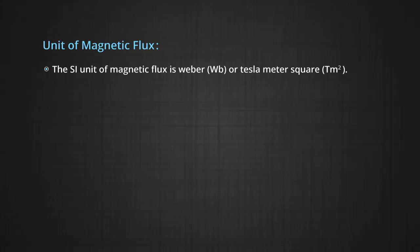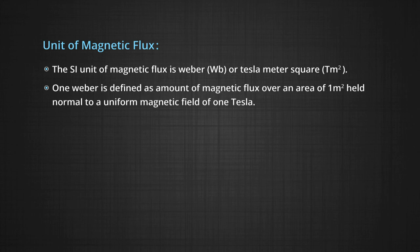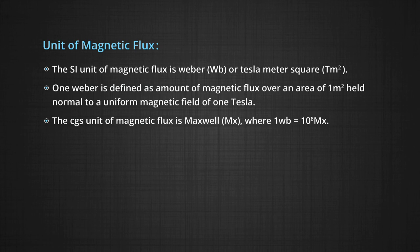The SI unit of magnetic flux is Weber or Tesla meter squared. 1 Weber is defined as the amount of magnetic flux over an area of 1 meter squared held normal to a uniform magnetic field of 1 Tesla. The CGS unit of magnetic flux is Maxwell, where 1 Weber equals 10⁸ Maxwell.